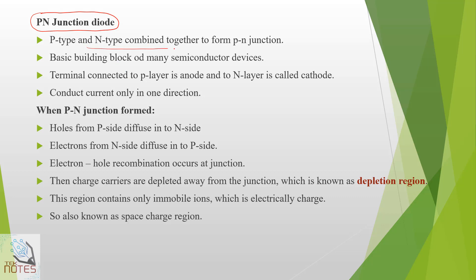P-type and N-type combine together to form a PN Junction. PN Junction is very important. Every semiconductor device will come down to the PN Junction. Back-to-back PN Junction diodes connected form a transistor. We use semiconductor devices to fabricate many components.